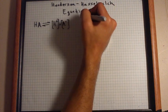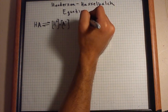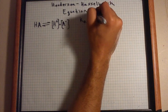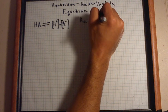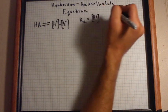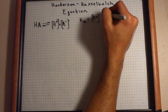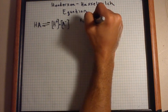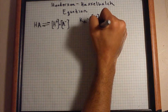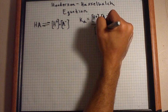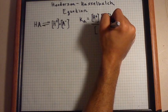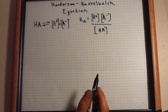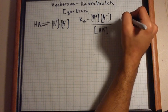We already know we can write a Ka acid dissociation constant by saying that the protons times the conjugate base over undissociated acid is equal to some constant value. Now if we rearrange for the proton...